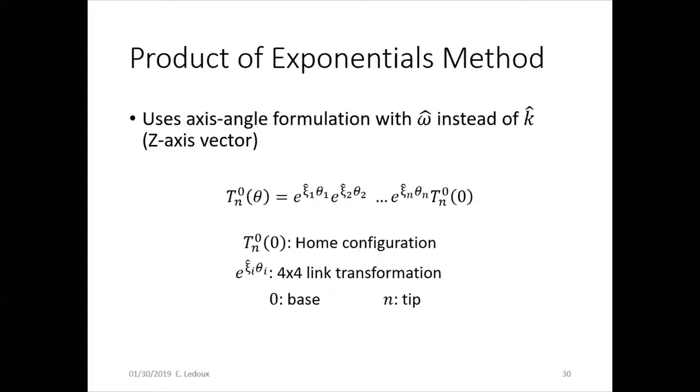The formula is T_n^0(θ) equals e^(ξ̂₁θ₁) times all this one for every single joint and then times the home configuration. Zero is the base and n is the tip.